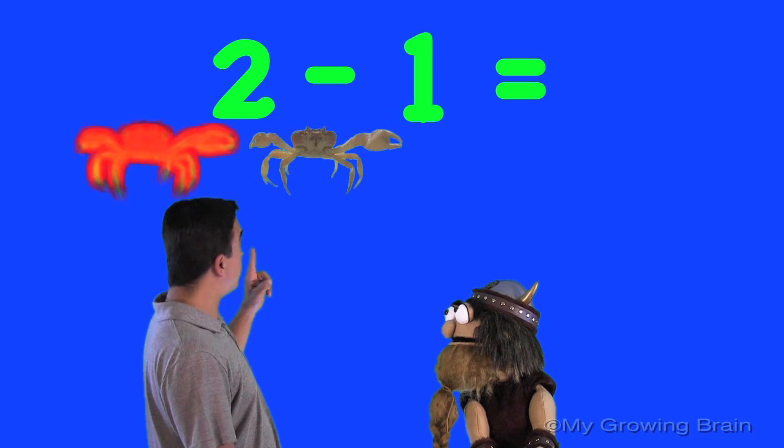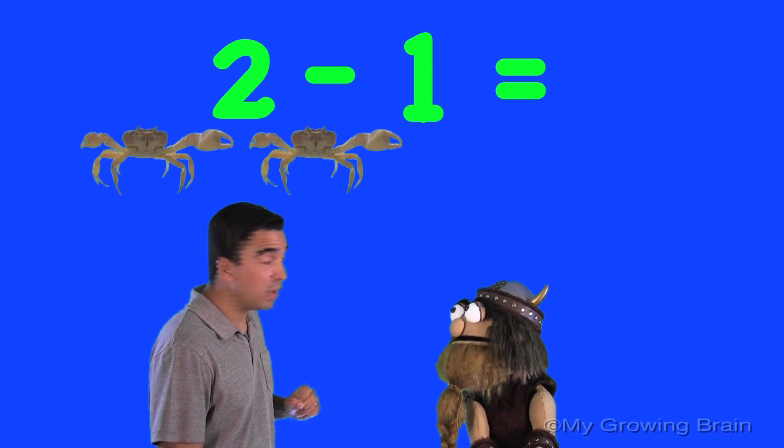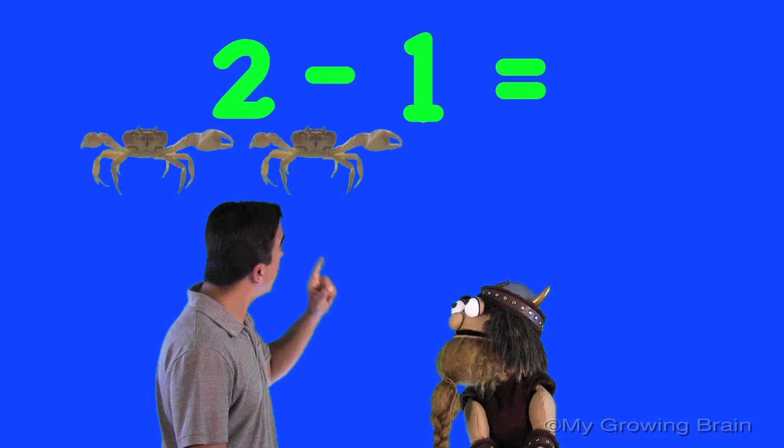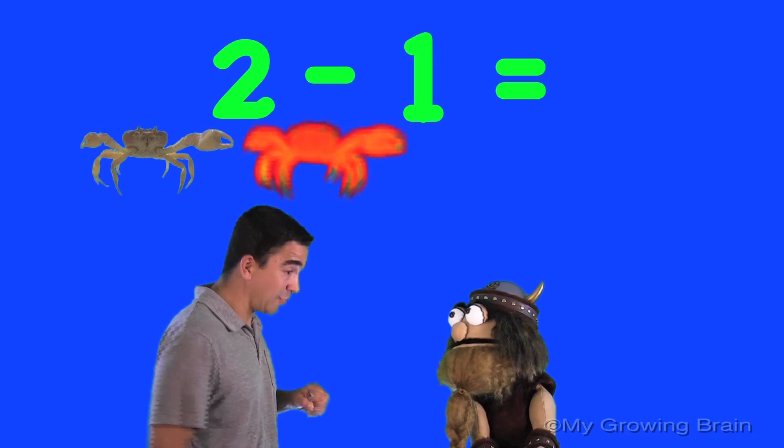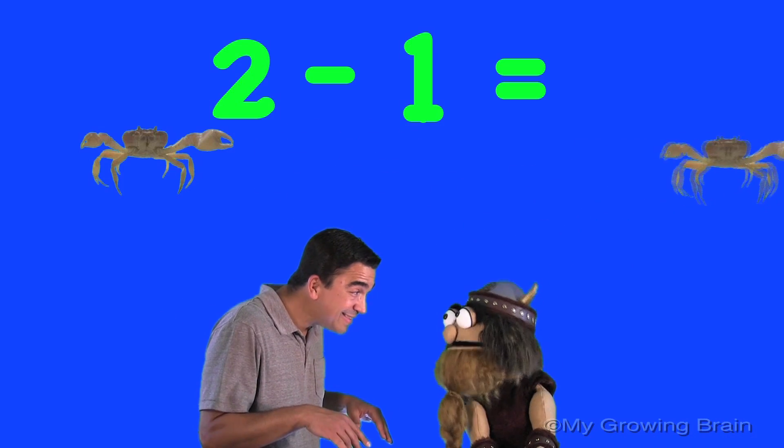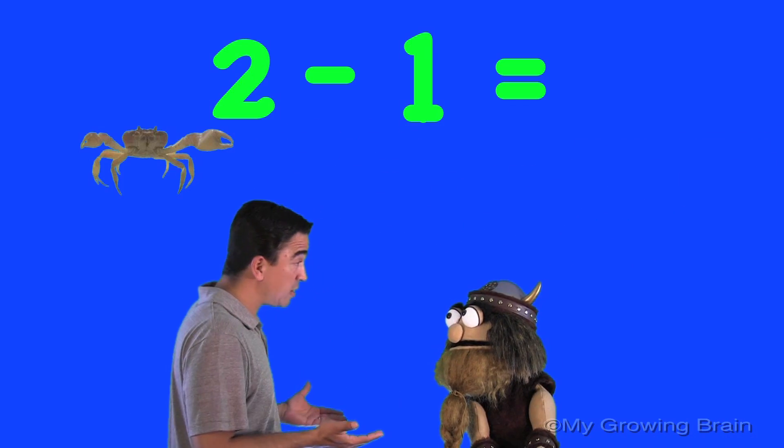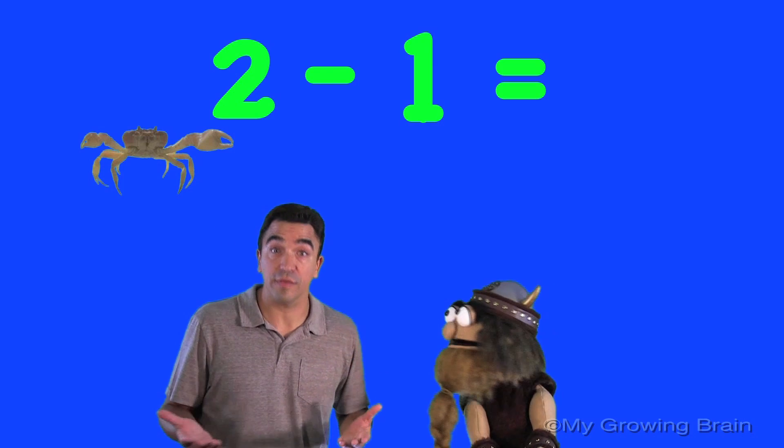So, one, two, two crabs. Minus one crab. So that crab crawls away. Okay. Now, can you finish the subtraction sentence?